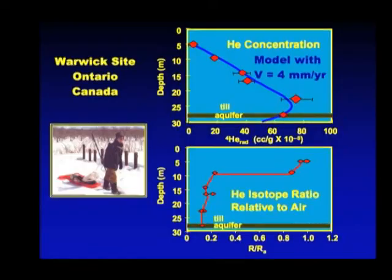Amy goes to the site and samples a nested piezometer — each one finished at a different depth in the system. Here's a typical result: we see large increases in the helium-4 concentration as a function of depth. She's modeled these systems, and you can fit these data quite well with a downward fluid velocity on the order of just four millimeters per year. That's a rate at which solute transport is more controlled by molecular diffusion than advection — perturbed by a small amount of advection, but mostly controlled by molecular diffusion.